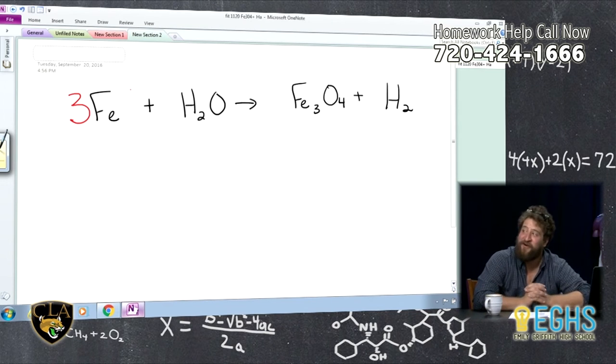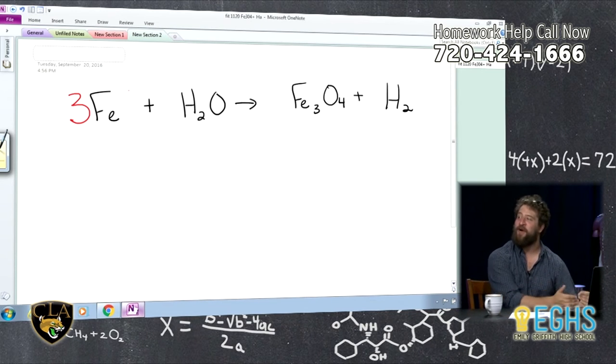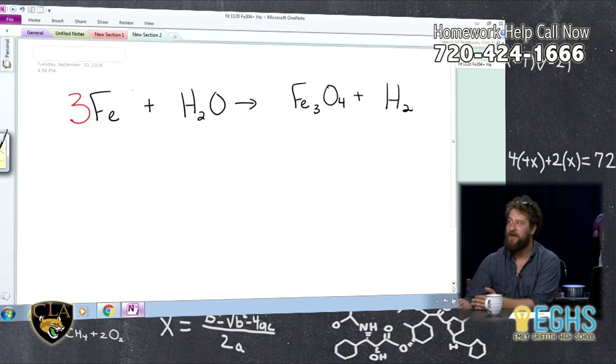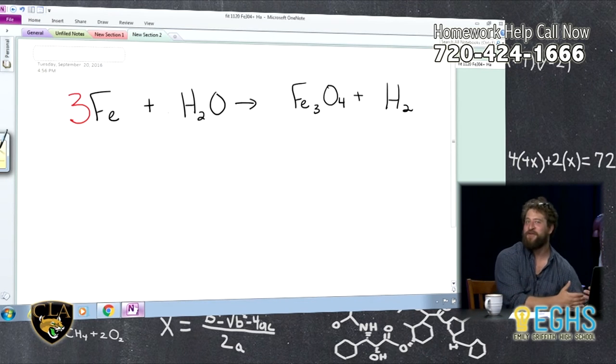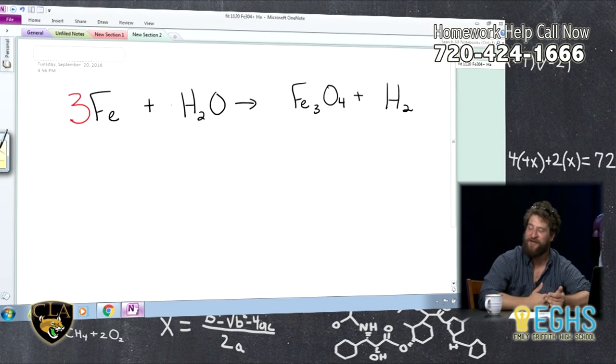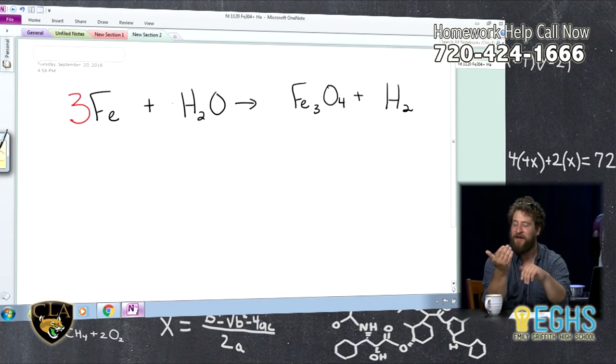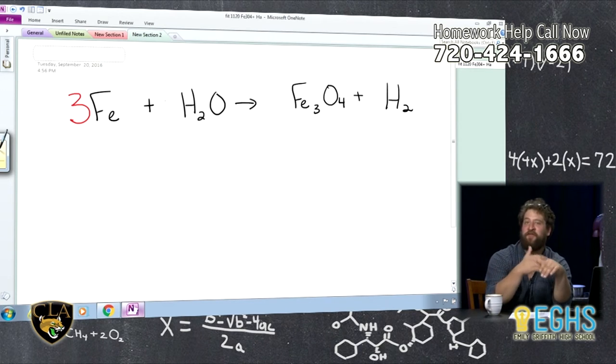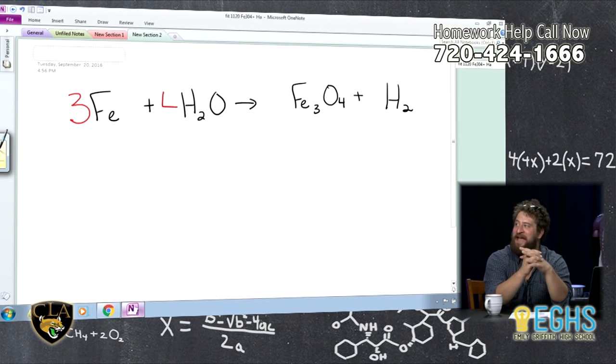So the next thing I'm looking at is my hydrogen. It's in balance. I have H2O on the left and H2 on the right. Even though on the left, the H2 is combined with oxygen, there's still two on the left and two on the right. So those are cool for now. But I also noticed that there's only one oxygen on the left and there's four on the right. So to compensate for that, I'm going to have Nate put a four in front of my H2O.